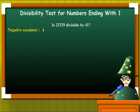Now let's look at the given number, 23,329. We write it here like this. Now look at the last digit. It is 9. Let's multiply this with the negative oscillator. 9 into 4, that is 36.